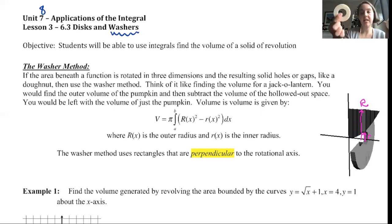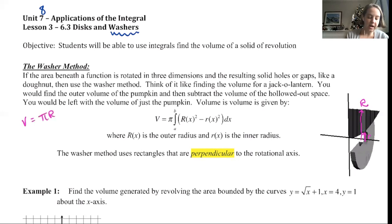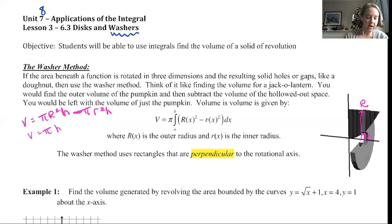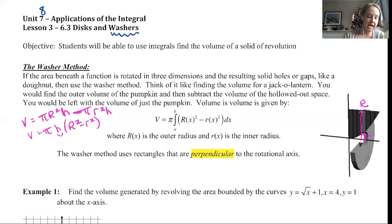Just like in the last lesson, it's the volume of the cylinder: V = πr²h. This time we've got two of them — so it's the outside minus the inside. The π and h are the same, so you can factor those out. You've got R² minus r². And h is that thickness — these are so thin, it's dx. So volume is π∫[a to b] (R² − r²) dx. That's where the formula comes from — they're really just cylindrical formulas.